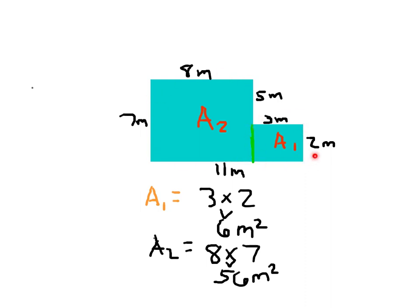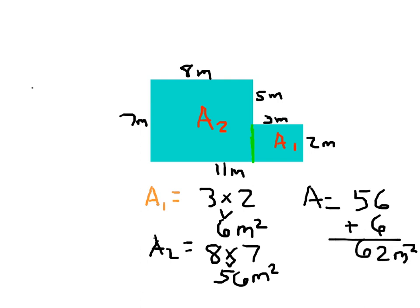I stated earlier that we're going to put these two areas together to find the area of the complex figure. What I mean is that we simply add them: 56 plus 6, and the label is square meters. That's how you figure out the area for this complex figure.